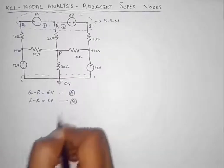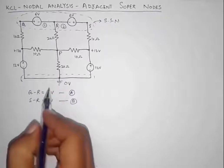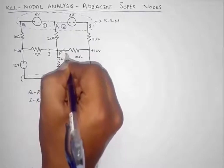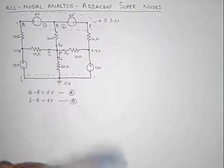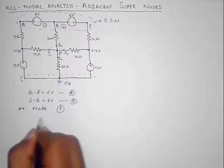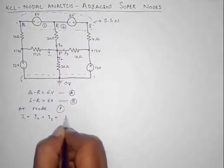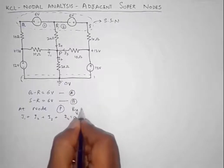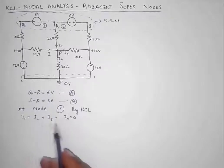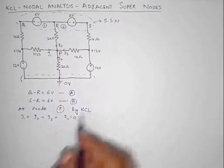Next I am going to apply KCL at node P. For that I will need the direction of currents I1, I2, I3, and I4 — four currents in these directions. At node P: I1 plus I2 plus I3 plus I4 equals zero by KCL, representing the sum of all currents entering this node.